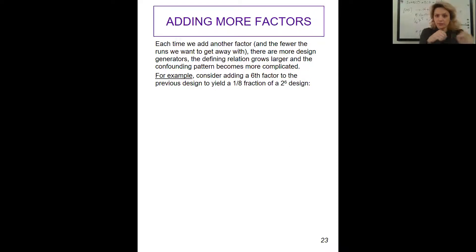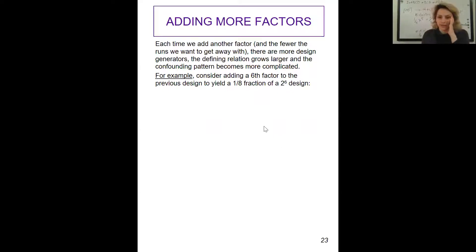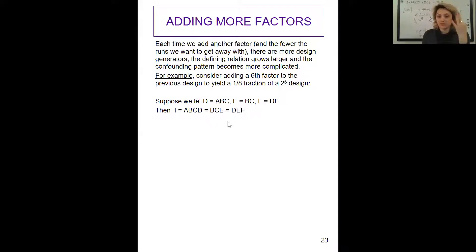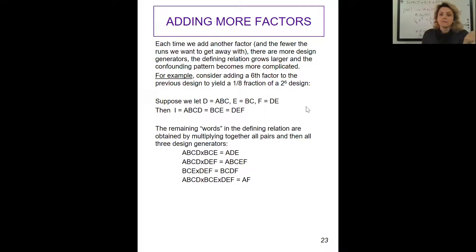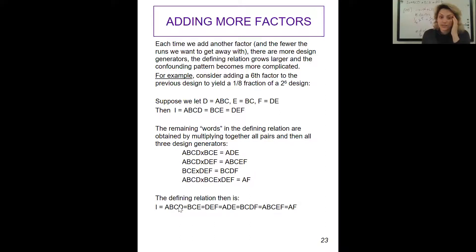For example, consider adding a sixth factor to yield a one-eighth fraction of the 2^6 design. Suppose we let D equal ABC, E equal BC, and F equal DE as our design generators — so we have three independent design generators. The defining relation is then I equal to ABCD, BCE, DEF, ADE, BCDE, and so on. Each of these terms we call words.